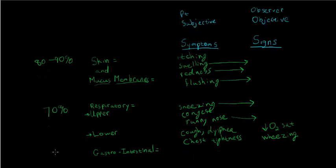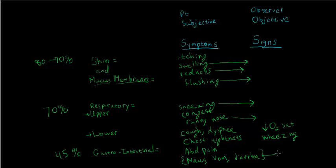In about 45 percent of patients, there is involvement of the gastrointestinal tract, the stomach, and the intestines. Patients will complain of abdominal pain, sometimes it's very cramping, nausea, vomiting, and diarrhea. And all three of these can be observed as well.